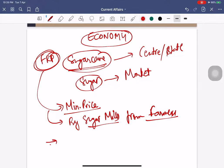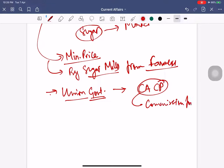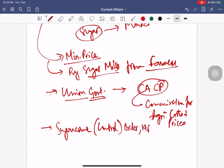It is fixed by Union government on the recommendation of the CACP - the Commission for Agricultural Costs and Prices. The FRP of sugarcane is determined under the Sugarcane Control Order 1966.